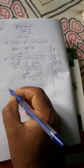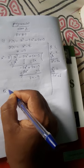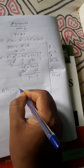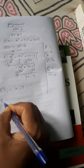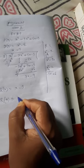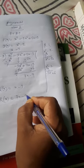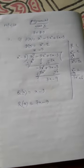This is the complete answer. So what is the quotient here? Q(x) will be x minus 3 and what is the remainder? R(x) equals 7x minus 9. This is the first question.